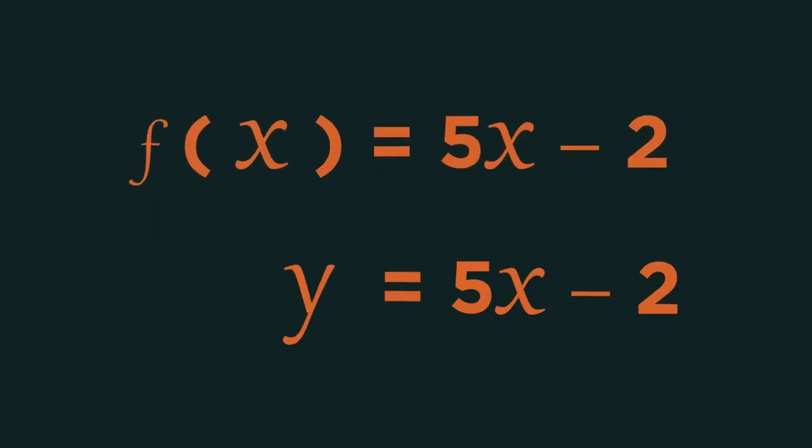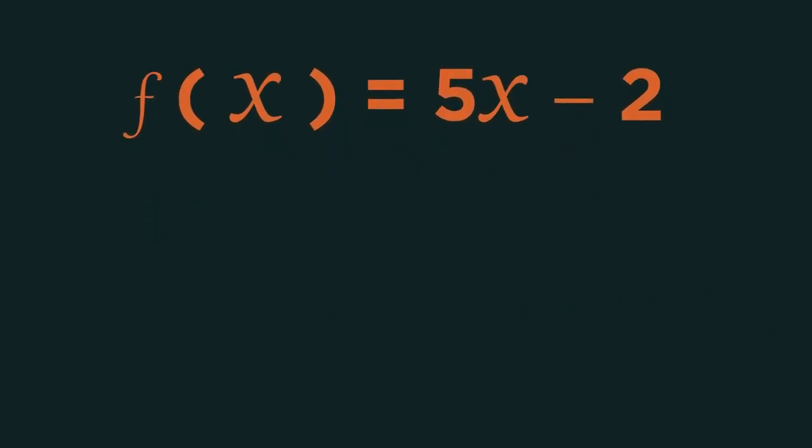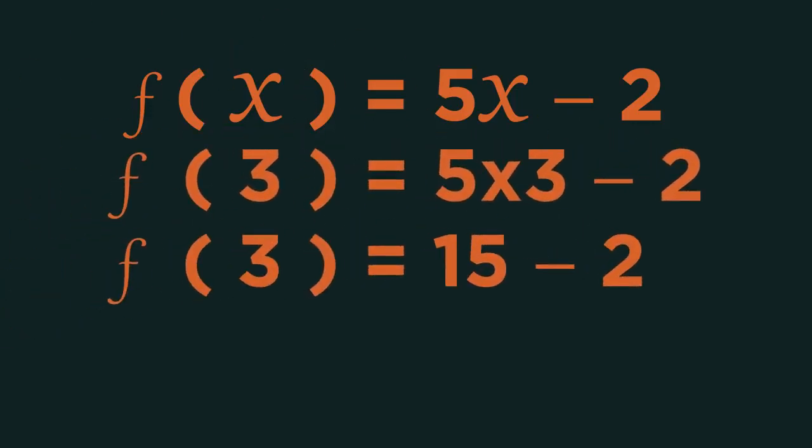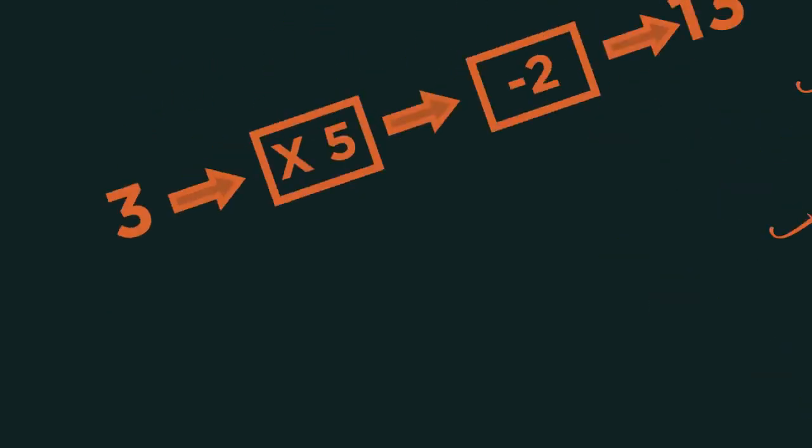If we wanted to calculate the value of f(3), we just need to replace the x in the function with 3, which we already knew from our input-output machine earlier.